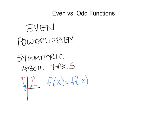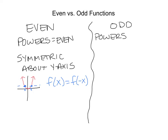Now let's think about odd functions. From the name, you can figure out that the powers are odd — 3, 5, 7, and so on. Odd functions are symmetric, but they're not symmetric about a line. They actually have rotational symmetry — they're symmetric about the origin.